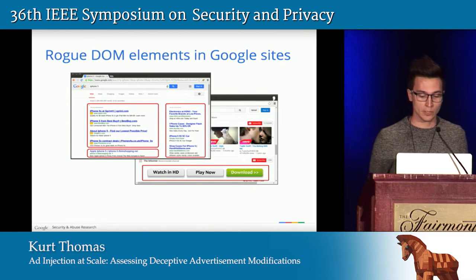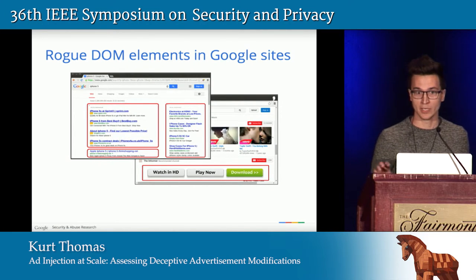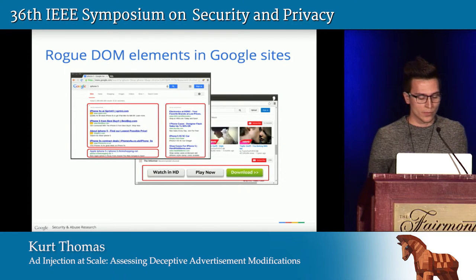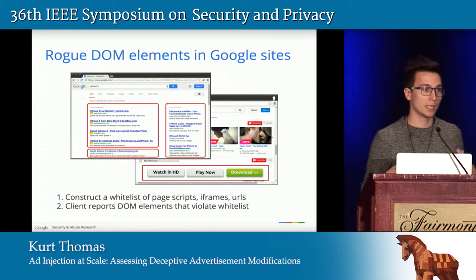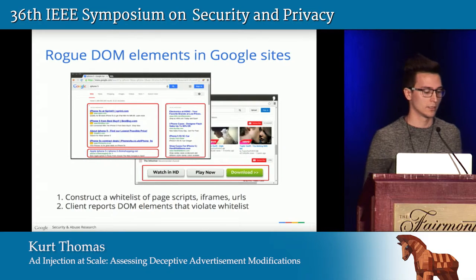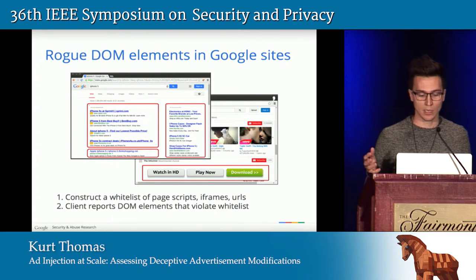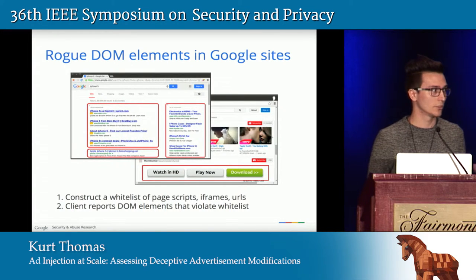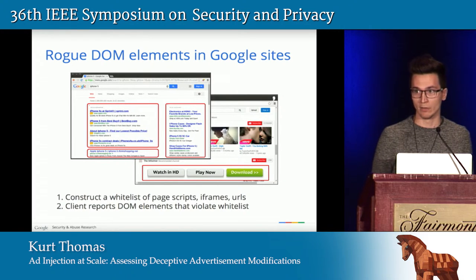Similarly, if you go to YouTube and search for Taylor Swift, you might see a new browser toolbar saying you can download videos, which actually leads to malware. The key insight is that as a server we know which content we're going to serve, so we can construct a whitelist of all the scripts, iframes, and URLs that should appear on that page and distribute this whitelist to the client. When the client loads the page and everything is rendered, we can scan the Google origin for non-whitelisted content and report back violations.